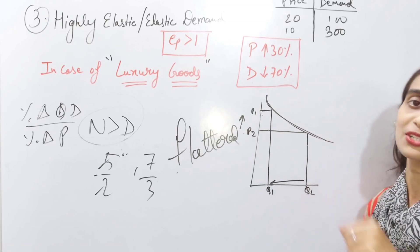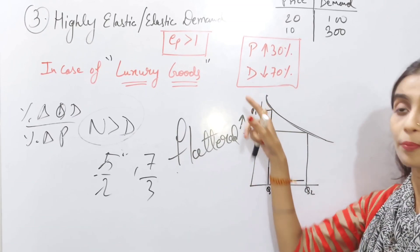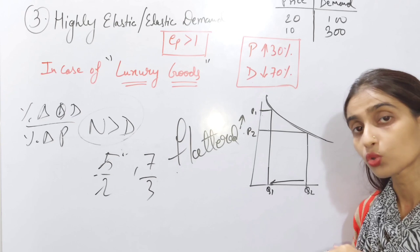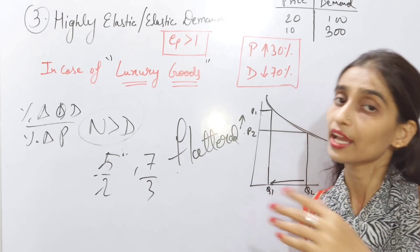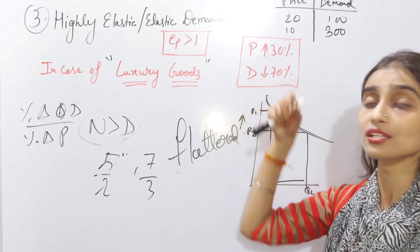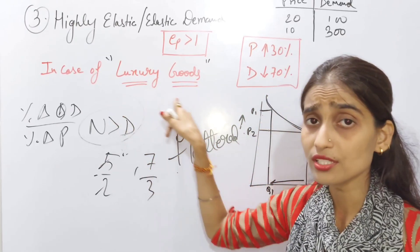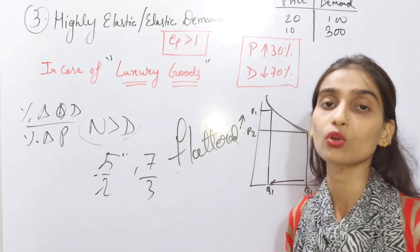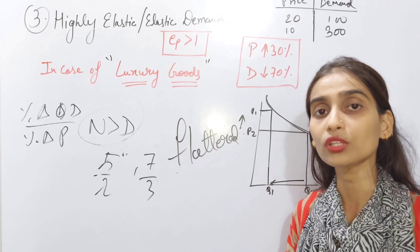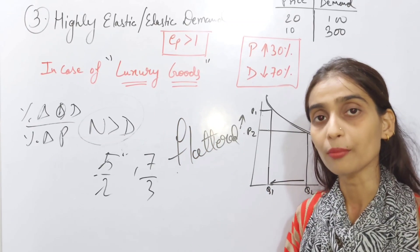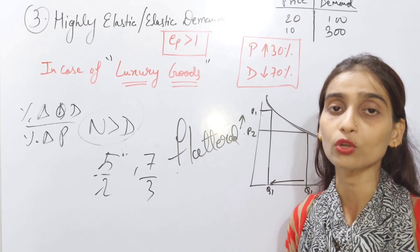So when price increases a little, demand decreases more and more, and vice versa. If the price is slightly less, demand increases a lot. This is the case for luxury goods — if price decreases slightly, demand rises greatly, and if price increases, demand drops significantly.